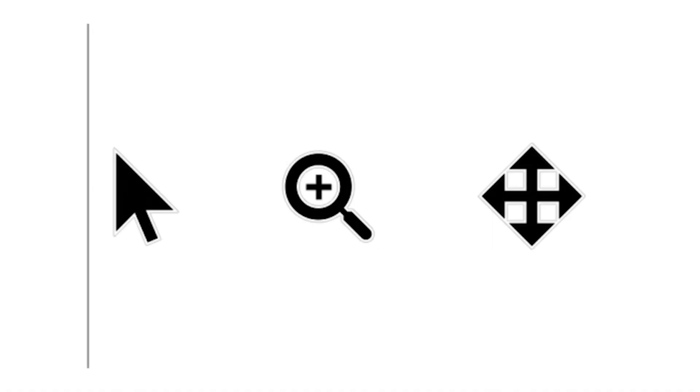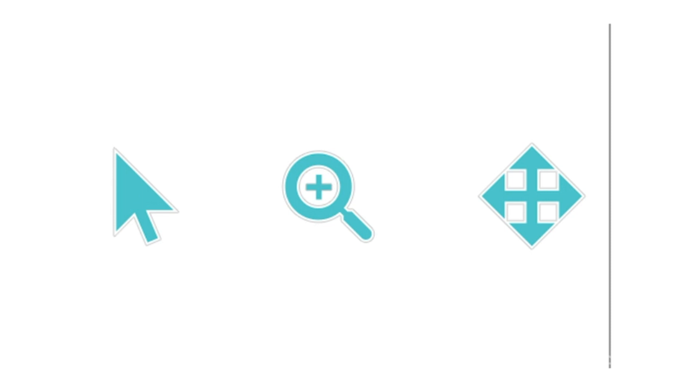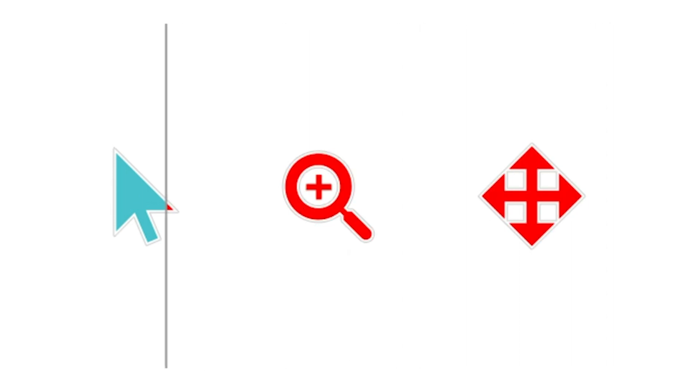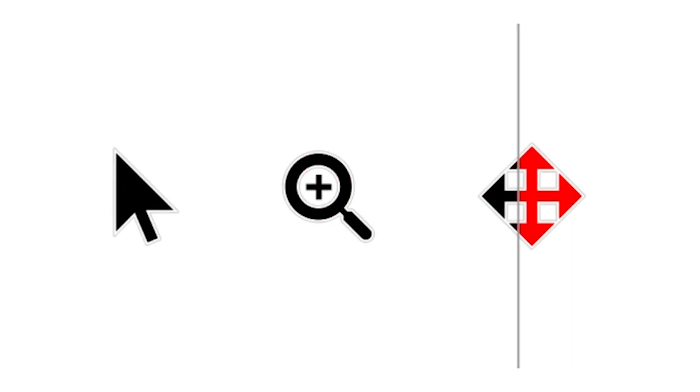Let's begin with some new accessibility features, starting with improvements to cursors. To help students see cursors better, they can now choose from seven colors in addition to the default black, and can also increase the size of the cursor for more visibility. To adjust the cursor, go to the mouse and touchpad section within the settings.